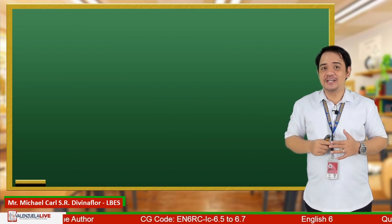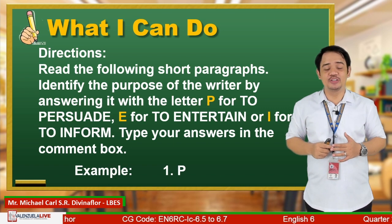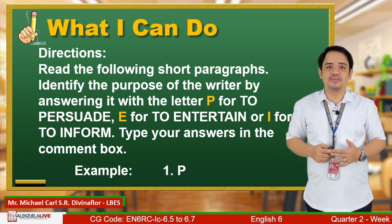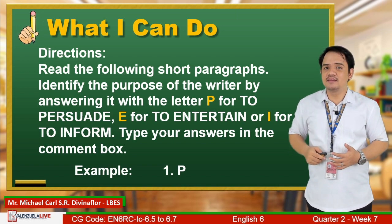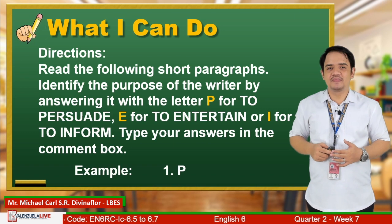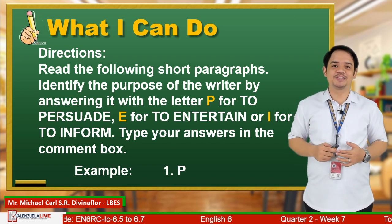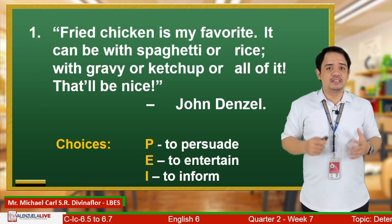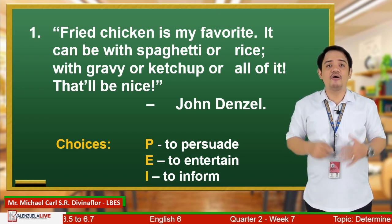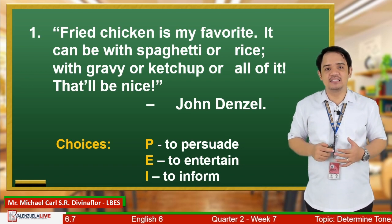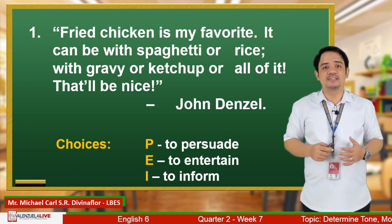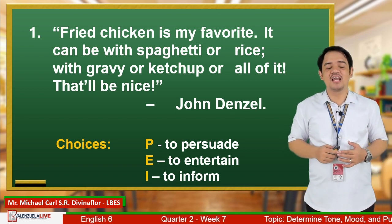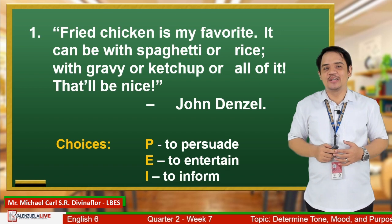Now, to check your learning, let's answer the 'What I Can Do' section in your module. Directions: Read the following short paragraphs and identify the purpose of the writer — P for to persuade, E for to entertain, or I for to inform. Type your answers in the comment box. Number 1: 'Fried chicken is my favorite. It can be with spaghetti or rice, with gravy or ketchup, or all of it. That will be nice.' By John Denzel. The correct answer is P — to persuade. The author aims to make the case for fried chicken.